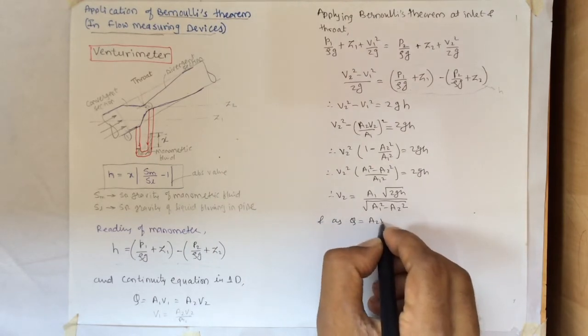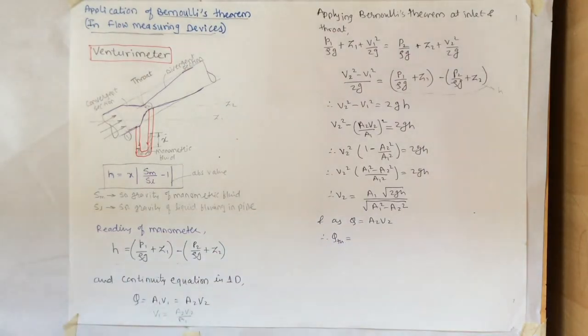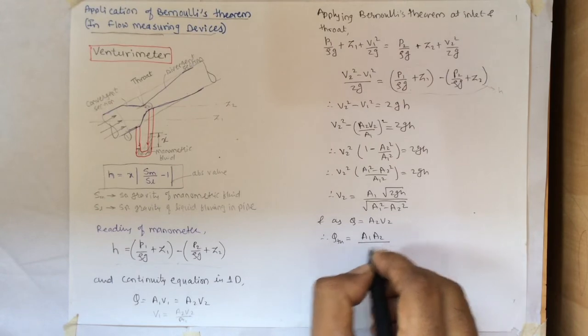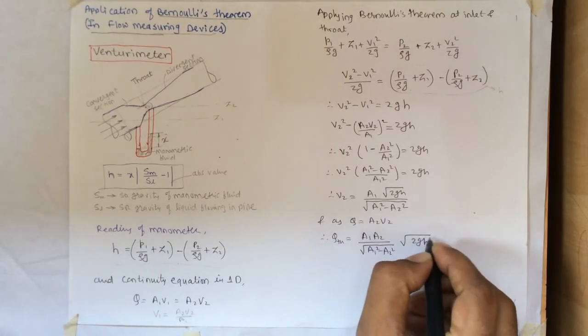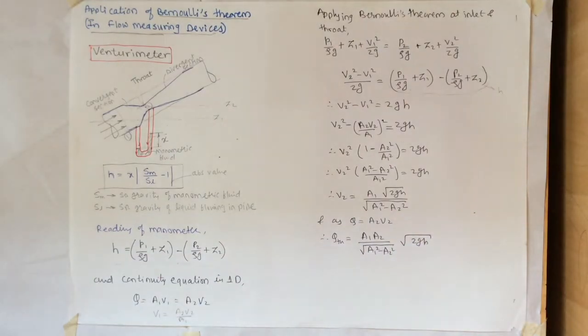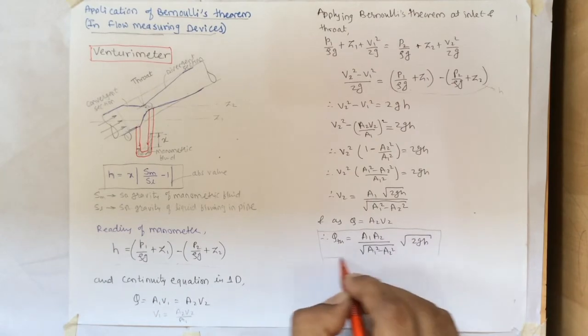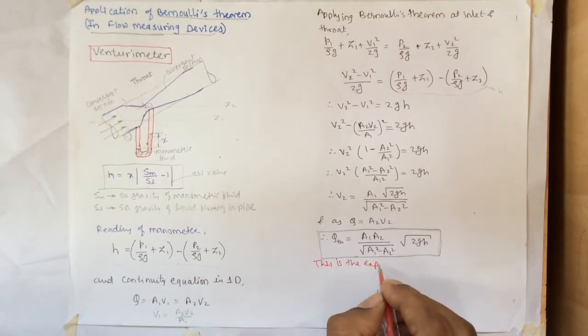As from continuity equation we have Q equals A2 V2, we get Q theoretical equals A1 A2 divided by root A1 square minus A2 square times under root 2gh. This is the theoretical flow formula that we get from Venturimeter after applying Bernoulli's theorem.